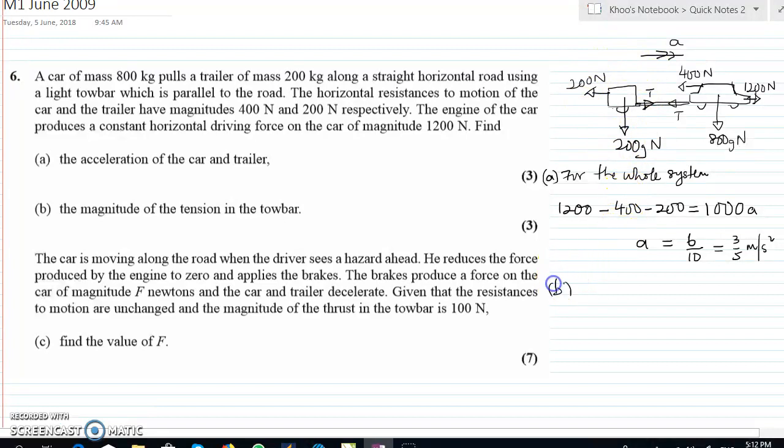Alright. So for the trailer, you should specify that for the trailer. We have T minus 200 equals to 200 times acceleration. In this case it's 3/5. Simplify that will give us T will be 120, and therefore T equals to 320 N.